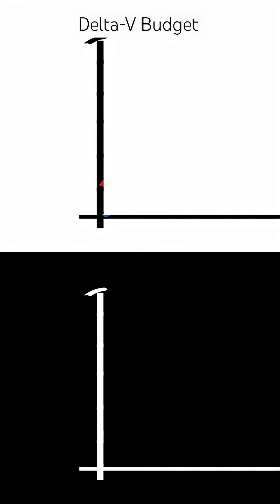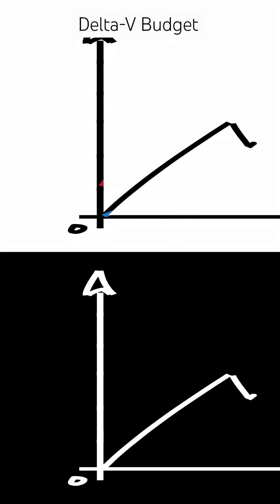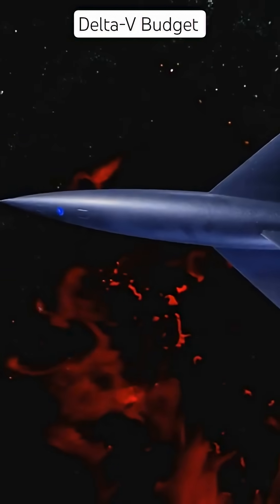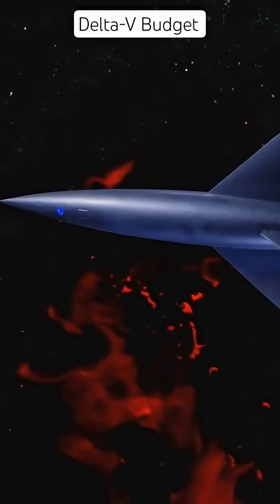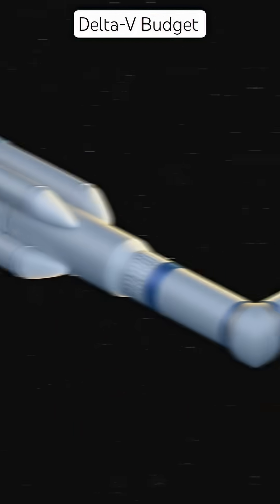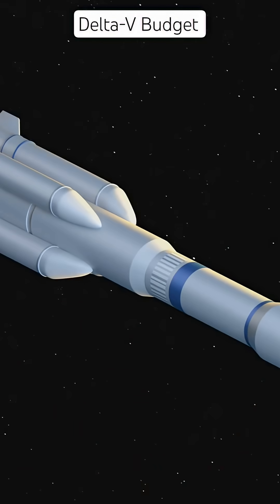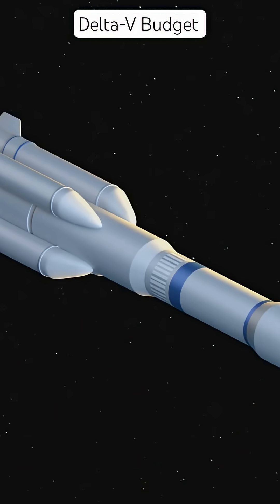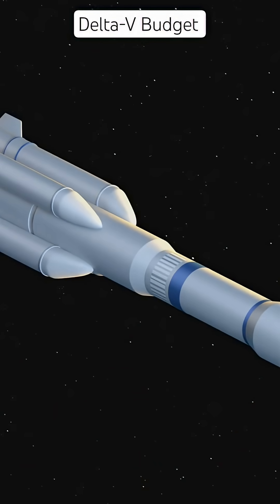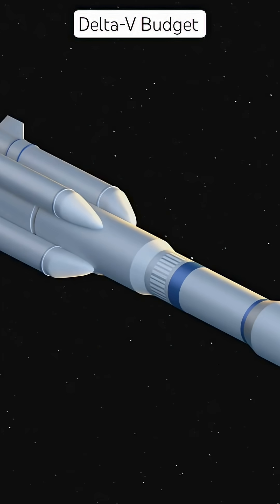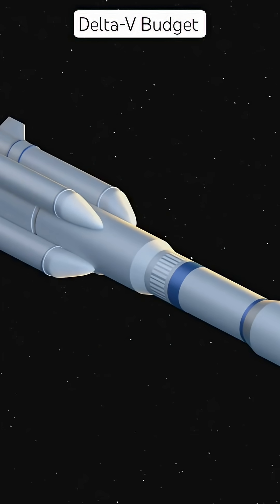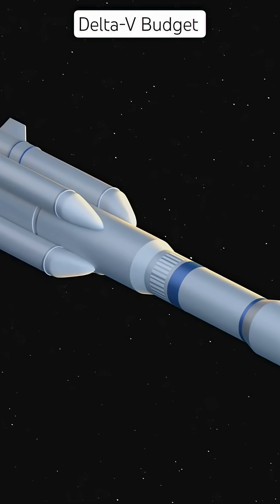Planning a space mission? You'll need one thing first: a Delta-V budget. Delta-V means total change in velocity. The Delta-V budget is the sum of all velocity changes needed to complete a mission, like launch, orbit changes, or landing.